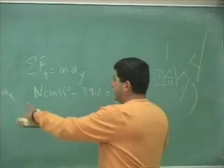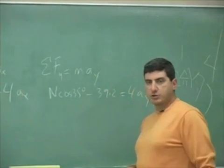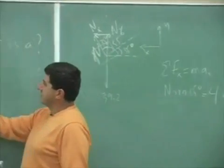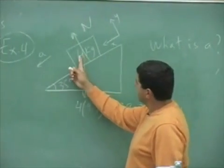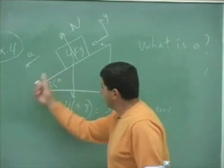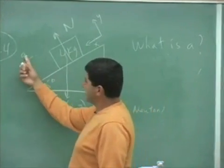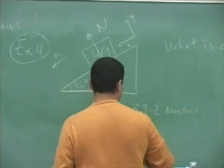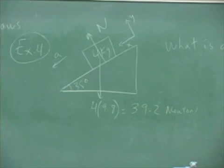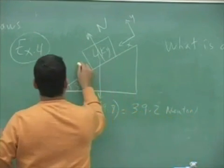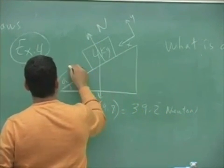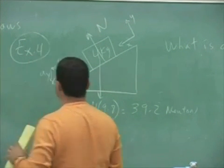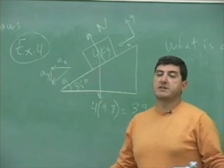Now, is any one of these acceleration zero? Is a_x zero or is a_y zero? Let's see. Now, this block is gonna accelerate down the incline, this direction. So the total acceleration that it's experiencing is actually comprised of a_x and a_y, right? So if this is the total acceleration, it has two components, a_x, a_y. So actually, the answer to that is none of them are zero. A_x is some number, and a_y is some number.